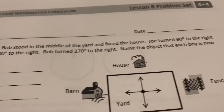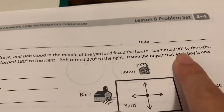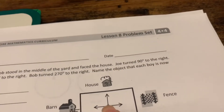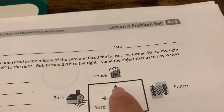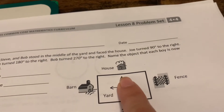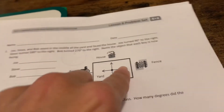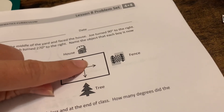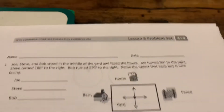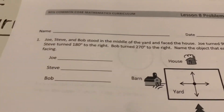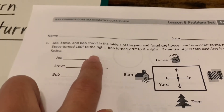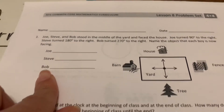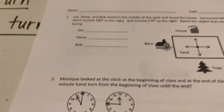Starting with Joe — he was in the middle of the yard facing the house, then he turned 90 degrees to the right. A 90-degree angle is a quarter turn, so he would be facing the fence. I would put: Joe is facing the fence. Then you have to figure out what Steve and Bob are each facing by following these directions.